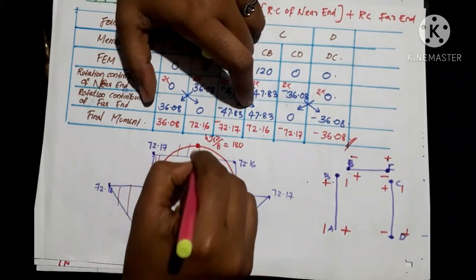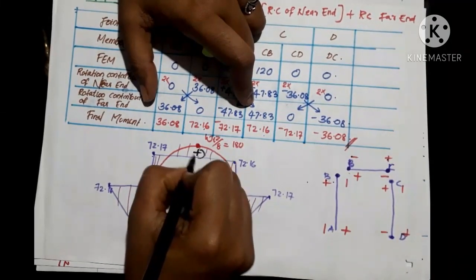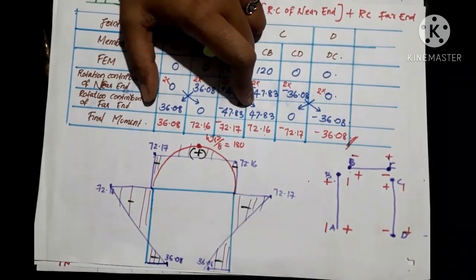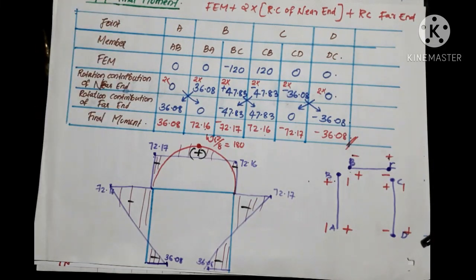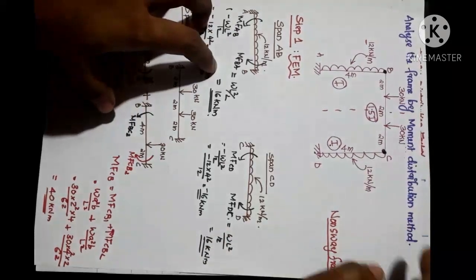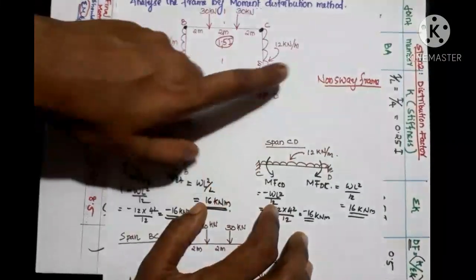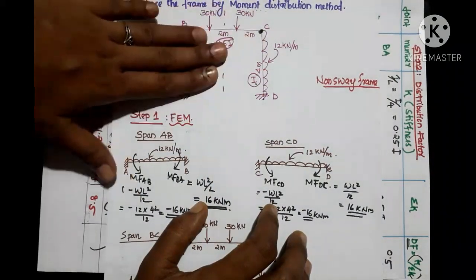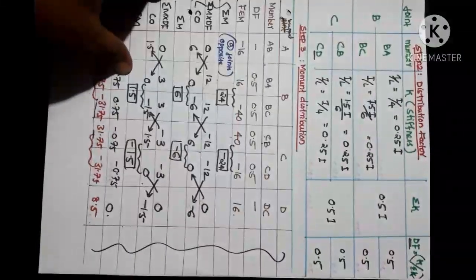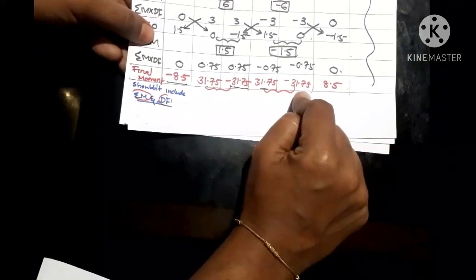Positive value is sagging and negative value is hogging. Hope you all understand. This is another problem you can do using the moment distribution method — analyze the frame by moment distribution method.